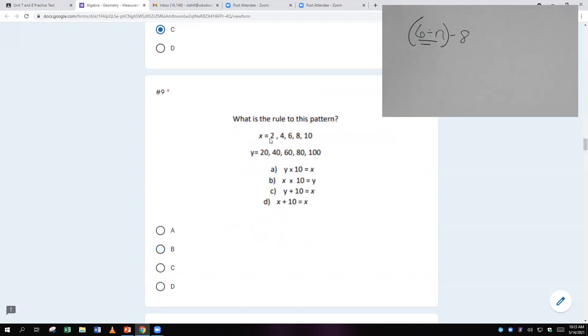What is the rule? Well, I'm seeing X turning into 20, 4 turning into 40, 6 turning into 60, 8 turning into 80, 10 turning into 100. To me, it seems like the pattern is getting multiplied by 10. The X gets multiplied by 10 to turn into the Y. So X times 10 equals Y, B.